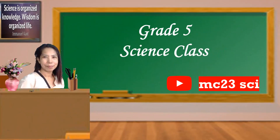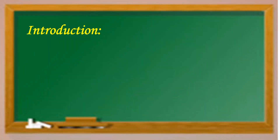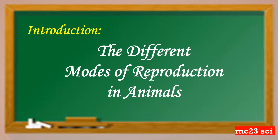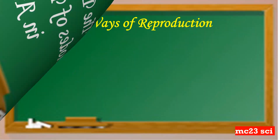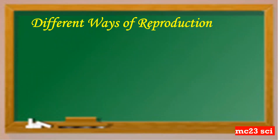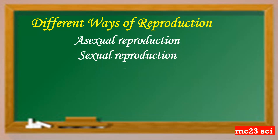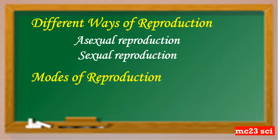Welcome to the Grade 5 science class. Today we're going to discuss the introduction of the different modes of reproduction in animals — the different ways of reproduction. These are asexual reproduction and sexual reproduction.